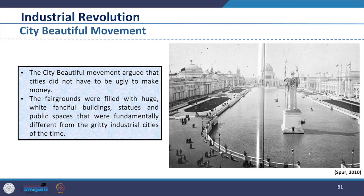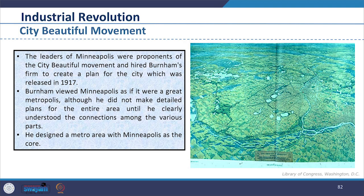The City Beautiful Movement argued that cities did not have to be ugly to make money, unlike what we had been seeing during the Industrial Revolution. The fair ground was filled with huge white fanciful buildings, statues and public spaces that were fundamentally different from the gritty industrial cities of the time. The visitors were mesmerized.